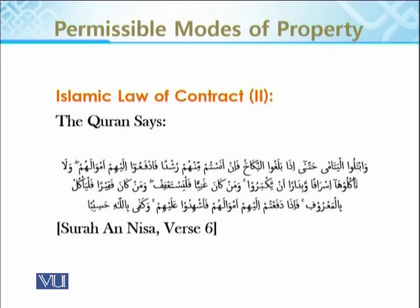Wabtalu al-yatama — and for the orphans whose fathers are not present, whose guardians are not there — keep testing them until they reach the age of marriage (nikah), meaning until they become aaqil. Fa'in anastum minhum rushdan — if you then see wisdom and prudence in them, fad-fa'u ilayhim amwalahum — then give them their wealth. So the two conditions — being aaqil and baaligh — emerge from this Quranic verse.